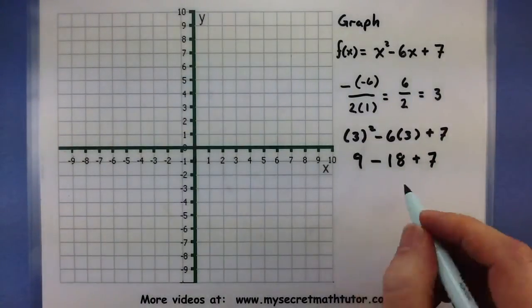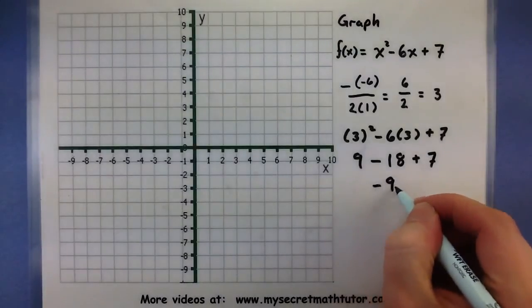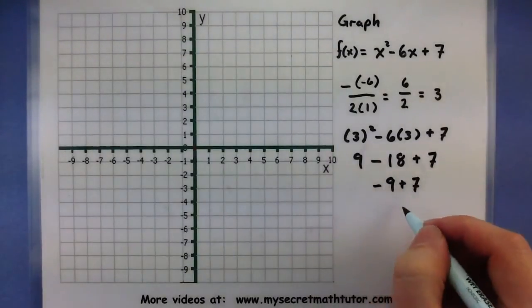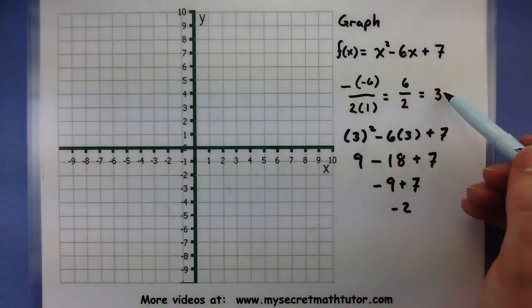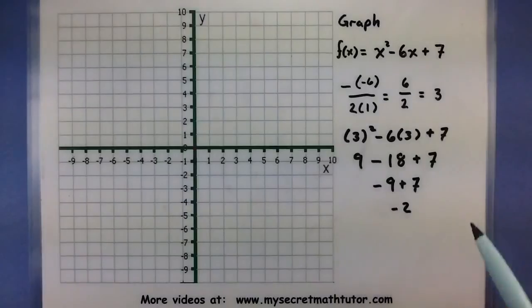So it looks like this is minus 9 plus 7, or a negative 2. So putting these two bits of information together, I have my x-value and my y-value of the vertex.